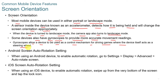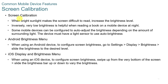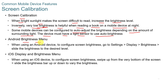To enable auto rotation on Android, go to Settings > Display > Advanced > Auto Rotate. On iOS, swipe up from the bottom of the screen and tap the lock icon to enable automatic rotation. You can also calibrate screen brightness — when bright sunlight makes a screen difficult to read, you can increase brightness. In low light, it's helpful to turn brightness down, such as when reading at night. Some mobile devices can auto-adjust brightness depending on surrounding light using a built-in light sensor. On Android, go to Settings > Display > Brightness. On iOS, swipe up from the bottom and slide the brightness bar.